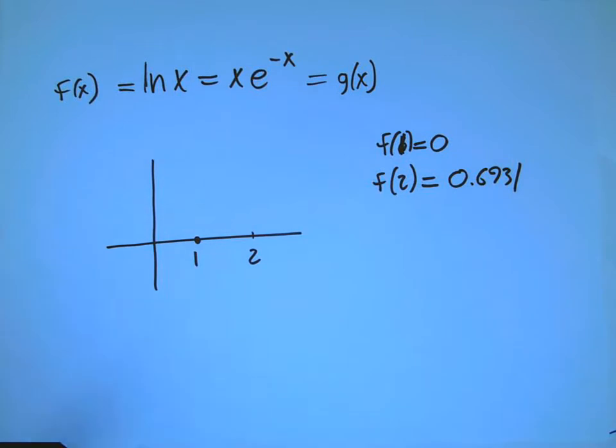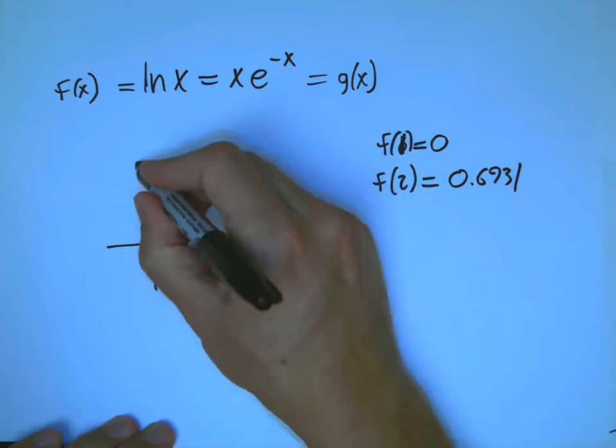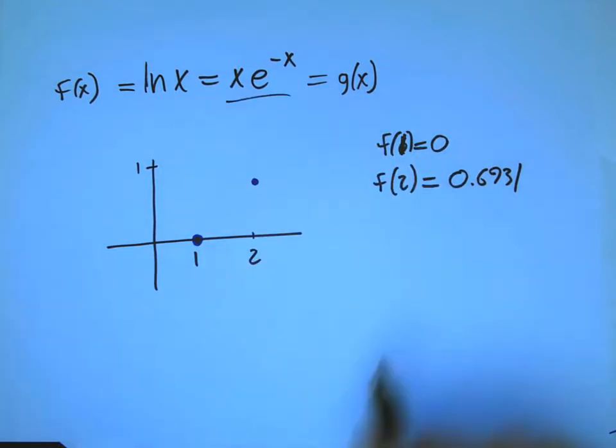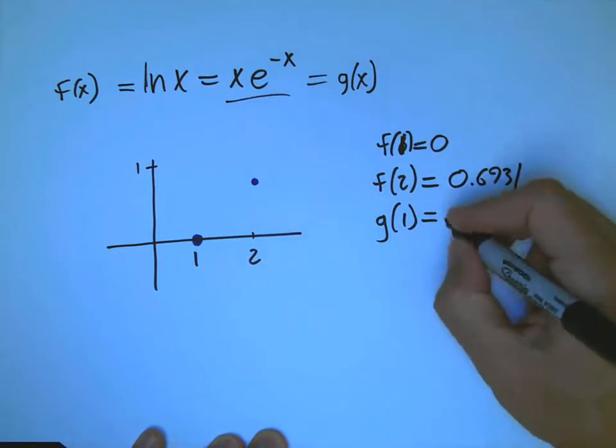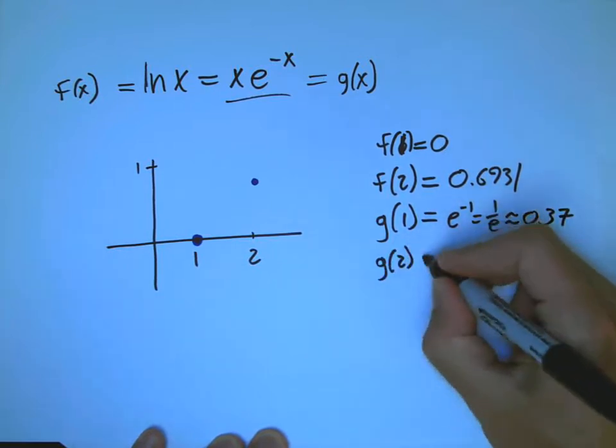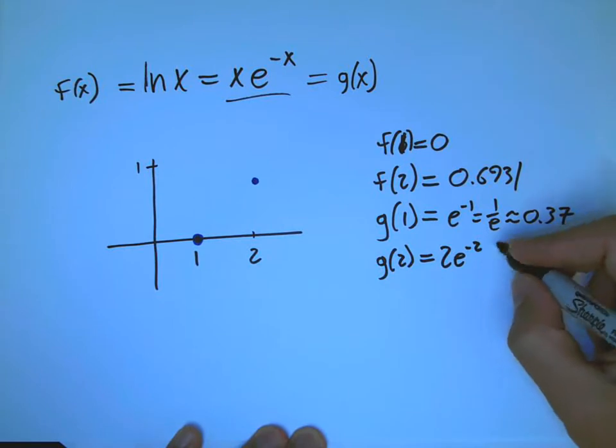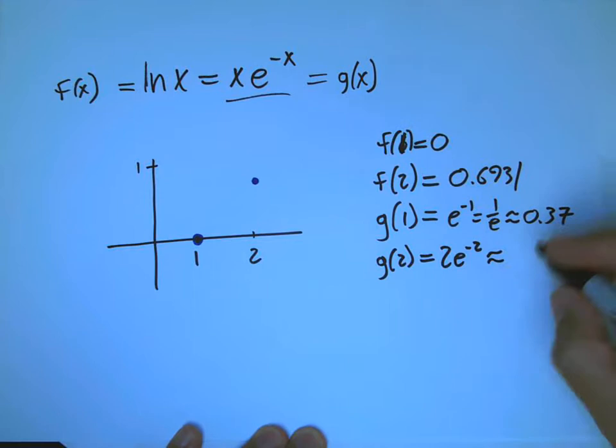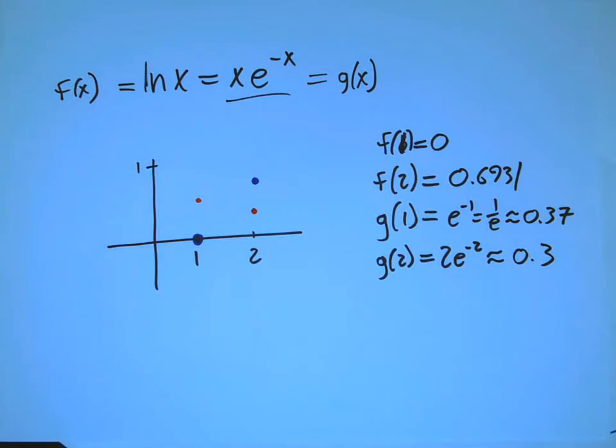And so that's going up. So here's a blue point and here's another blue point. And let's say 1 is way up here. And now what about x e to the minus x? That's g. g of 1 is equal to 1 times e to the minus 1, or 1 over e, or about 0.37. And g of 2 equals 2 e to the minus 2, which is about 0.3, very roughly. And so that guy's going down from a little more than a third to maybe a little less than a third as we go.